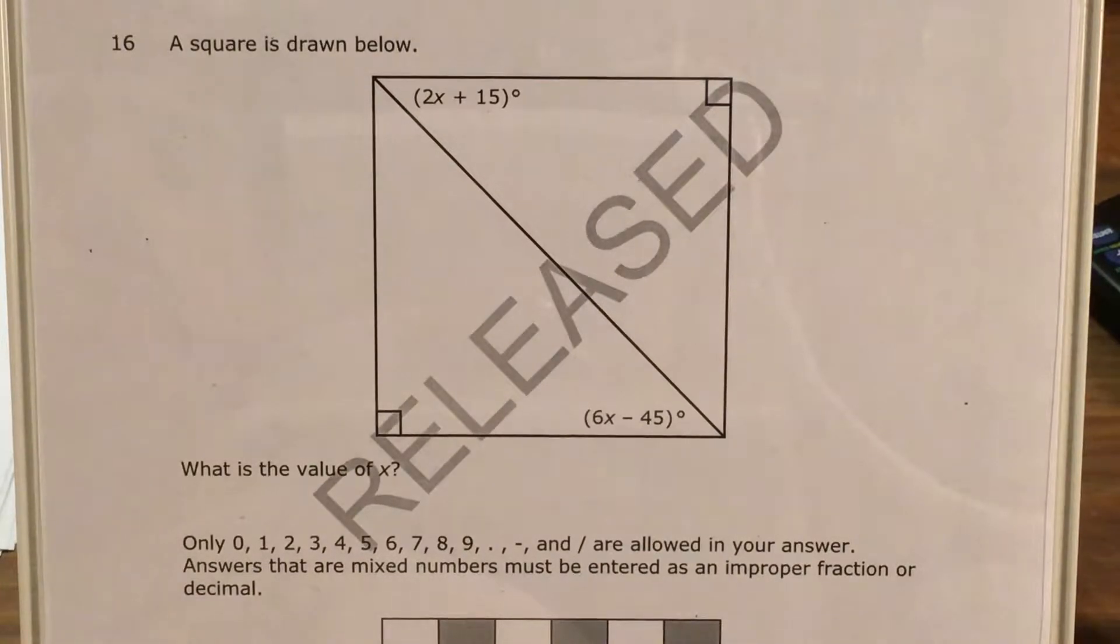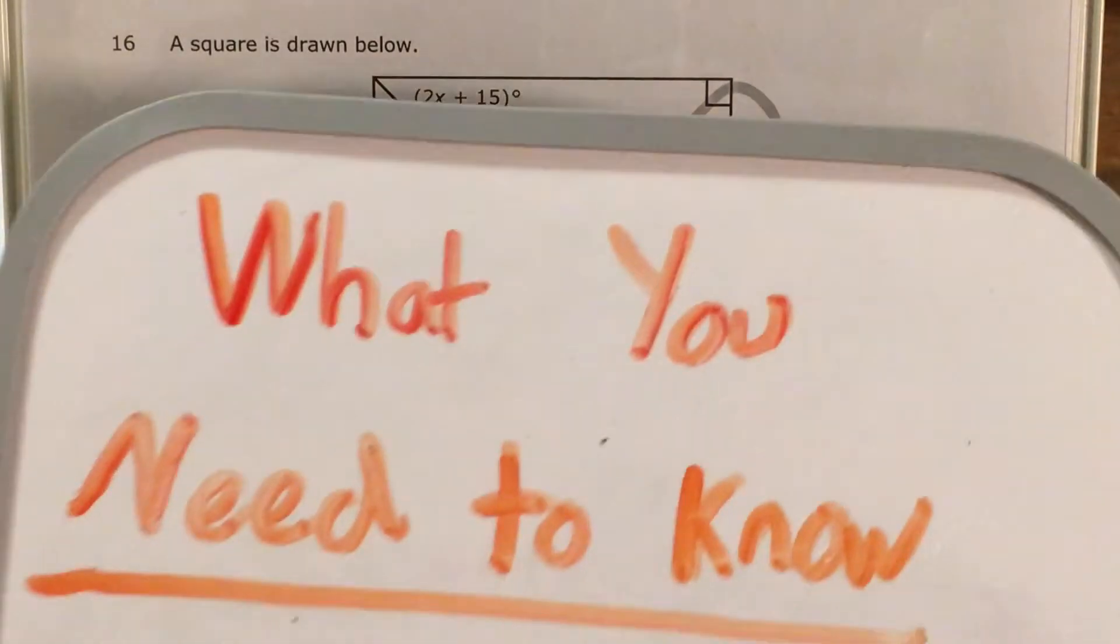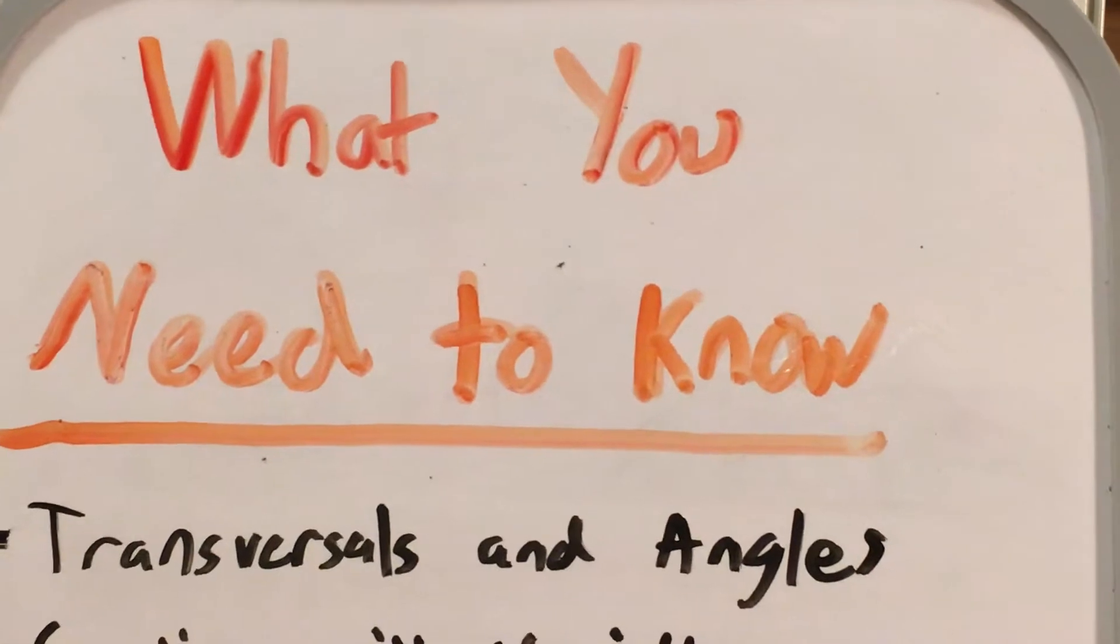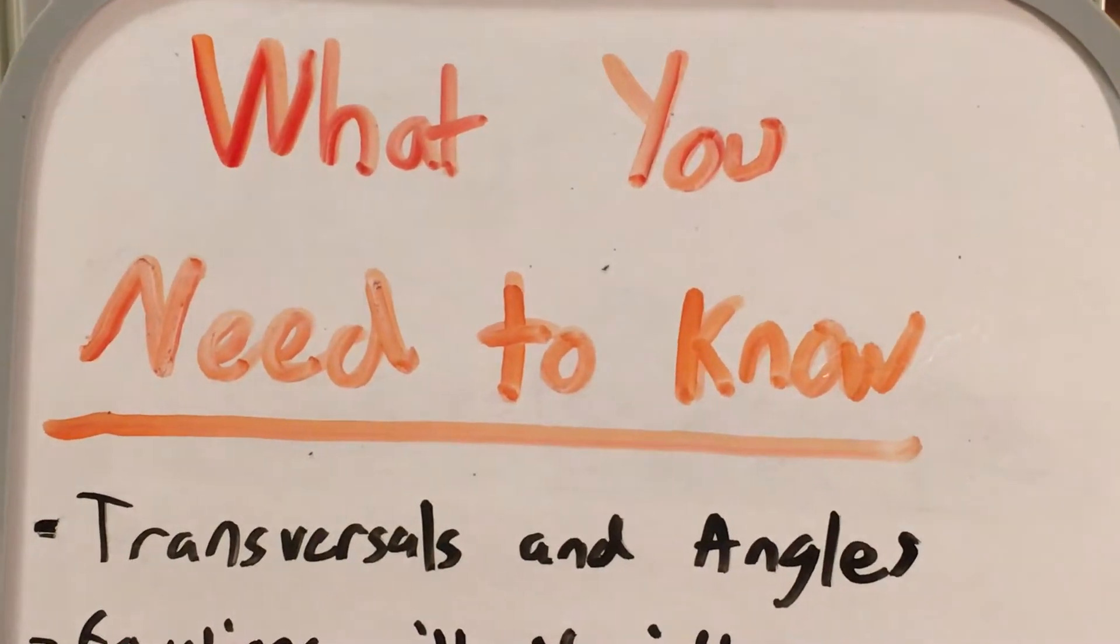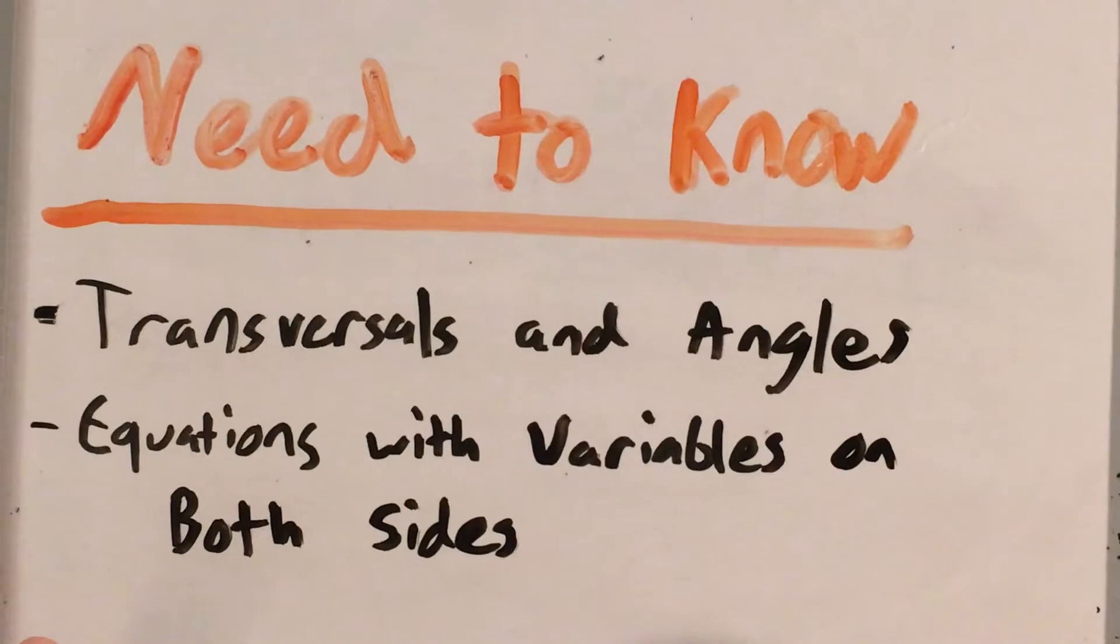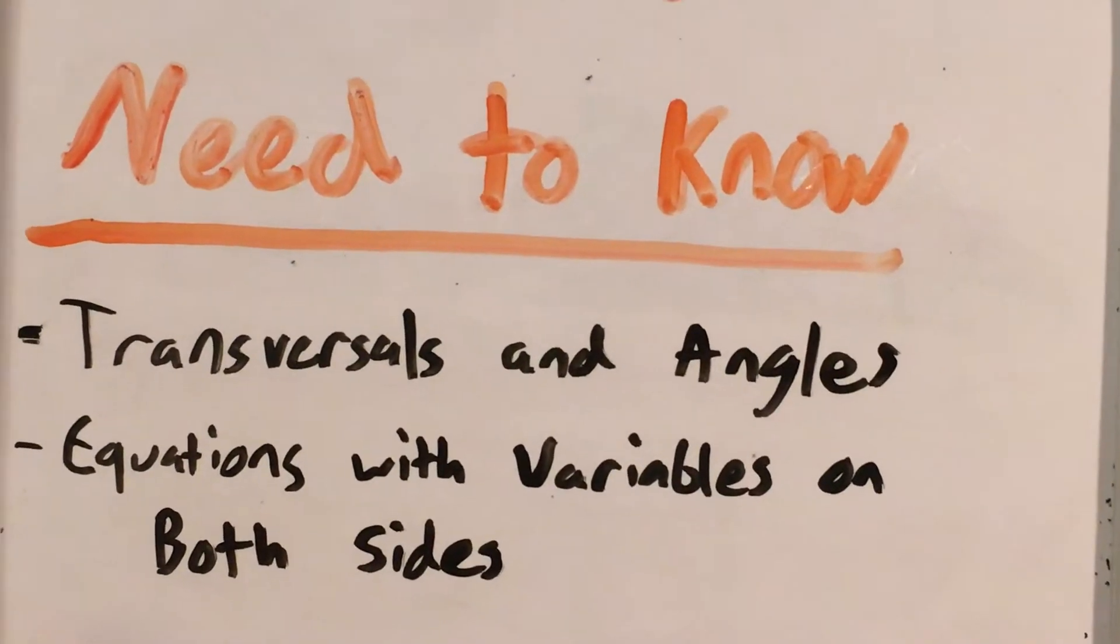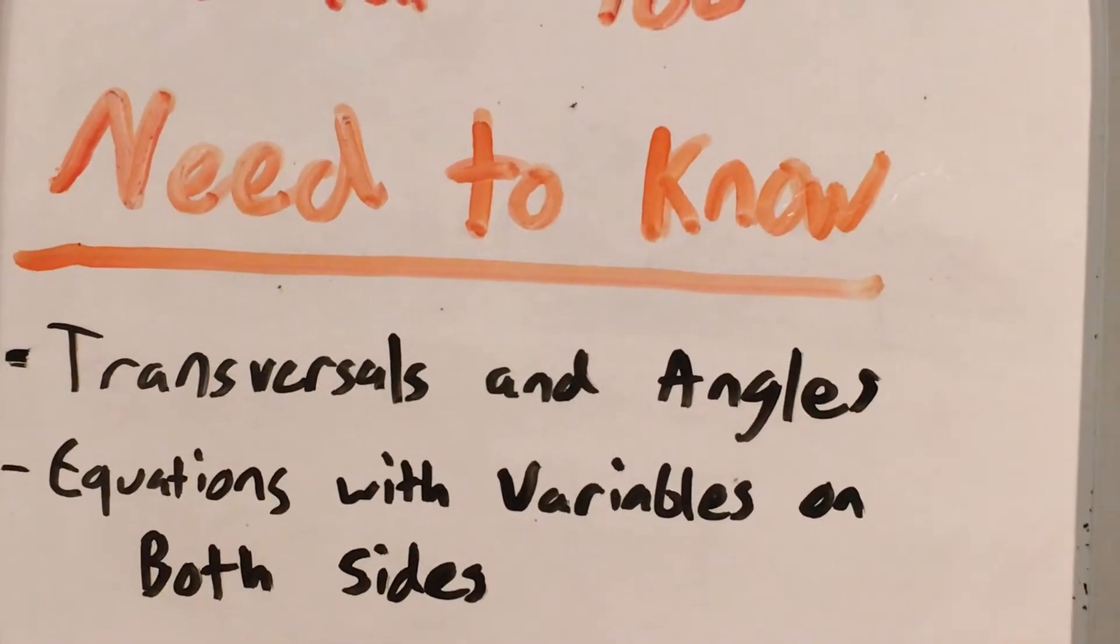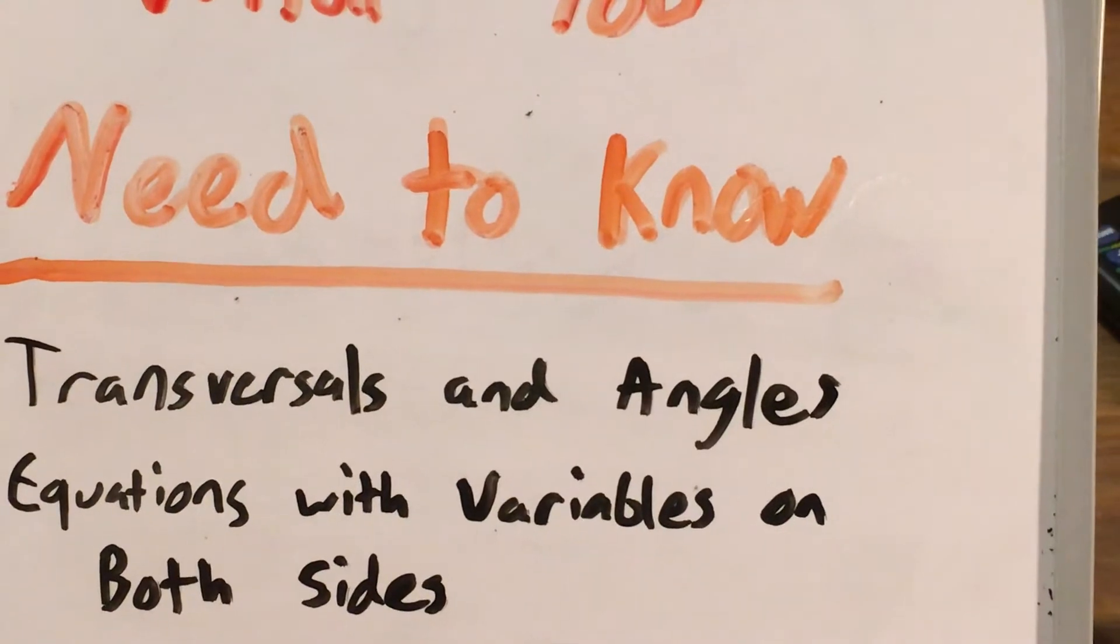Now in order to do a question like this, we're going to need to know some geometry about transversals and angles and I'll go over what a transversal is and what all that means. We are also going to need to know what to do with an equation when we have a variable on both sides. There's a bit of a different strategy that we'll need there but we'll figure it out and we'll make it through.